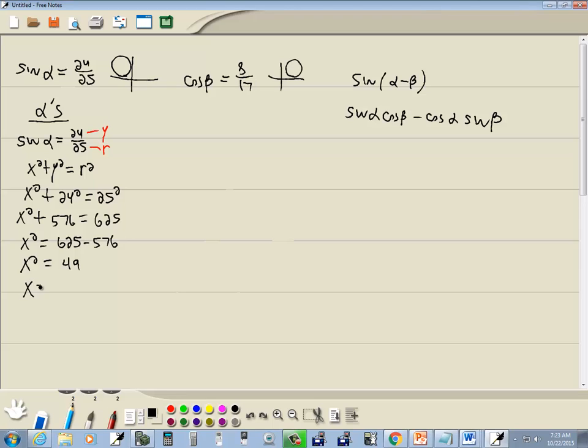Square root property. We drop our squared. We put a plus or minus square root on the other side. Which gives us x is equal to plus or minus 7. But in quadrant 2, x is negative. So we're going to have x is equal to negative 7. Now we need cosine alpha. And cosine is equal to x over r. Which is going to equal to negative 7 over r, which is 25.